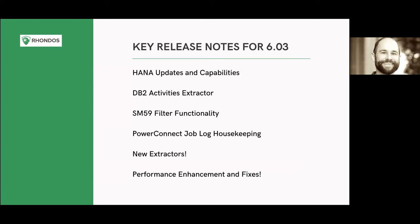Some of the features here are at the specific request of customers. We were able to accelerate two requests from IPG. There's now an SM59 filter change that makes it very easy for you to select multiple different SM59 destinations and disable those if you need to turn certain things off. It also gives you visibility into the sort capability and the different types of destinations so that you can dictate which ones might be valuable to extract and which ones aren't.